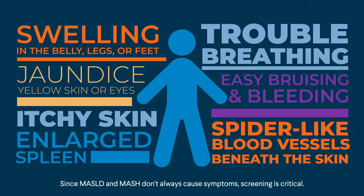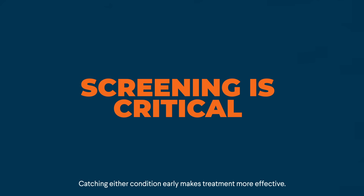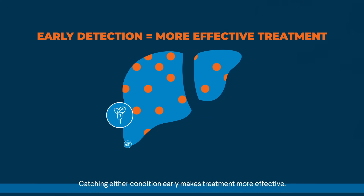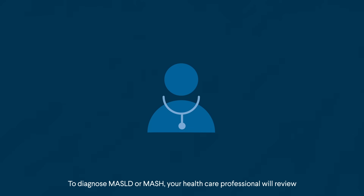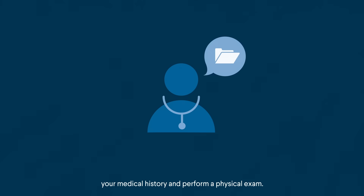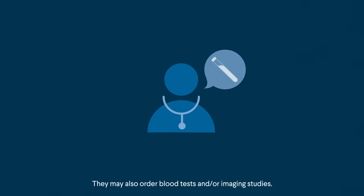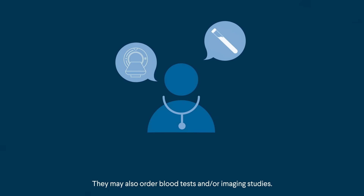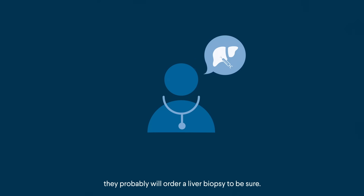Since MASLD and MASH don't always cause symptoms, screening is critical. Catching either condition early makes treatment more effective and can also prevent further damage to your liver. To diagnose MASLD or MASH, your healthcare professional will review your medical history and perform a physical exam. They may also order blood tests and/or imaging studies. If your healthcare professional thinks you might have MASH, they will probably order a liver biopsy to be sure.